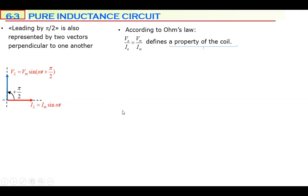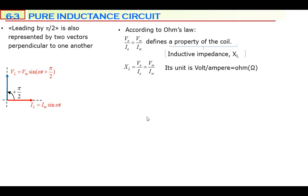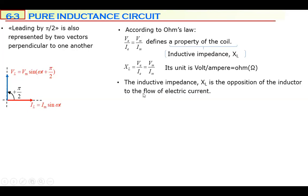We still use Ohm's law here because there is a measurable potential difference and electric current. The ratio VE/IE or Vm/Im defines a property of the coil. In a resistor, this ratio defined resistance. Here, it measures inductive impedance XL. Inductive impedance is the opposition of the inductor to the flow of electric current. If XL is greater, electric current is harder to flow — similar result to resistance, but different in nature.